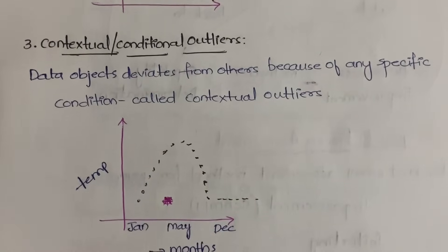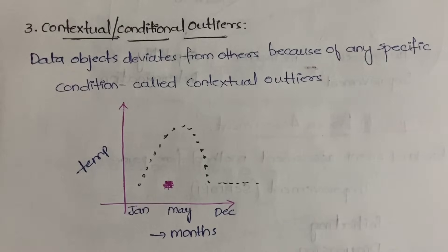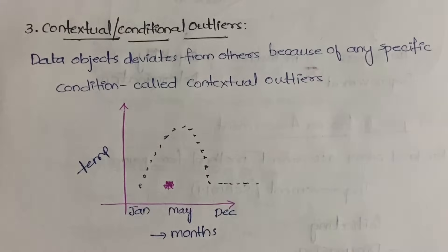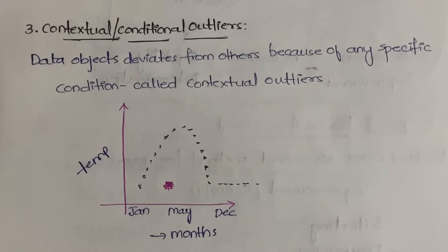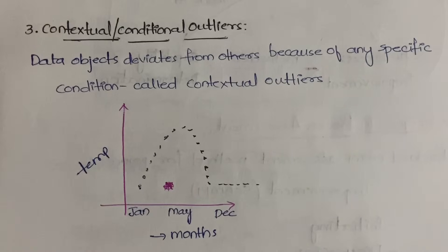The third type is the contextual or conditional outlier. Data objects deviate from others because of any specific condition. For example, in January temperatures are usually very low; gradually by May they reach the maximum, then decrease till December. If in May the temperature suddenly drops to what we see in January — say 10 or 15 degrees Celsius — because of some condition like a flood or some unconditional reason, the temperature has dropped. Because of that specific condition it is not obeying the general behavior, so it is called a contextual or conditional outlier.